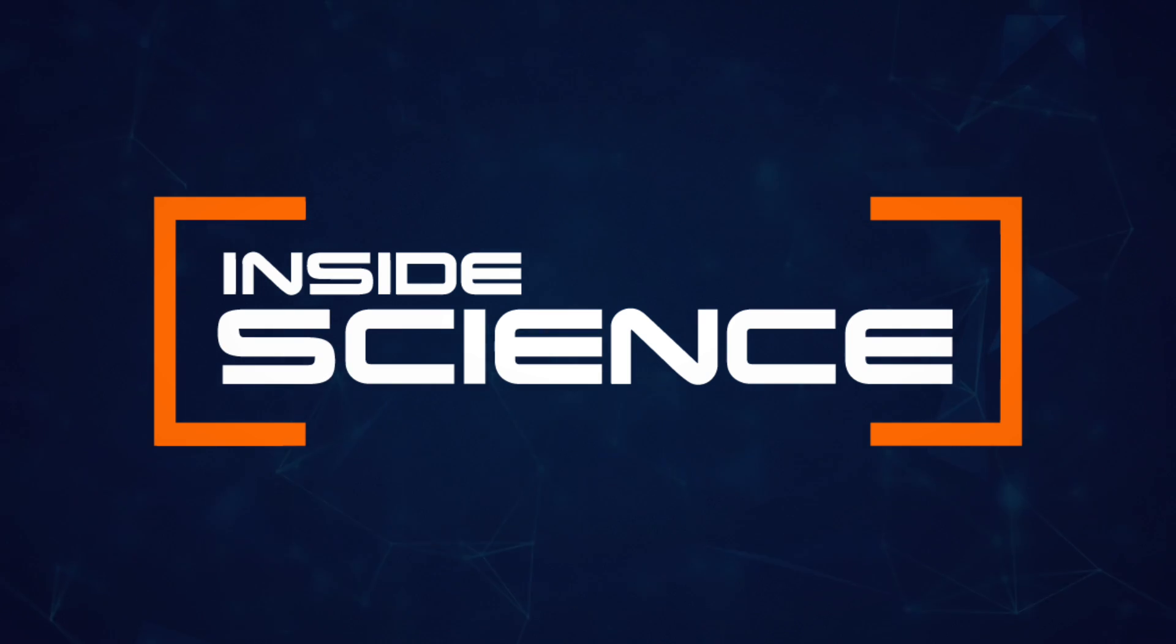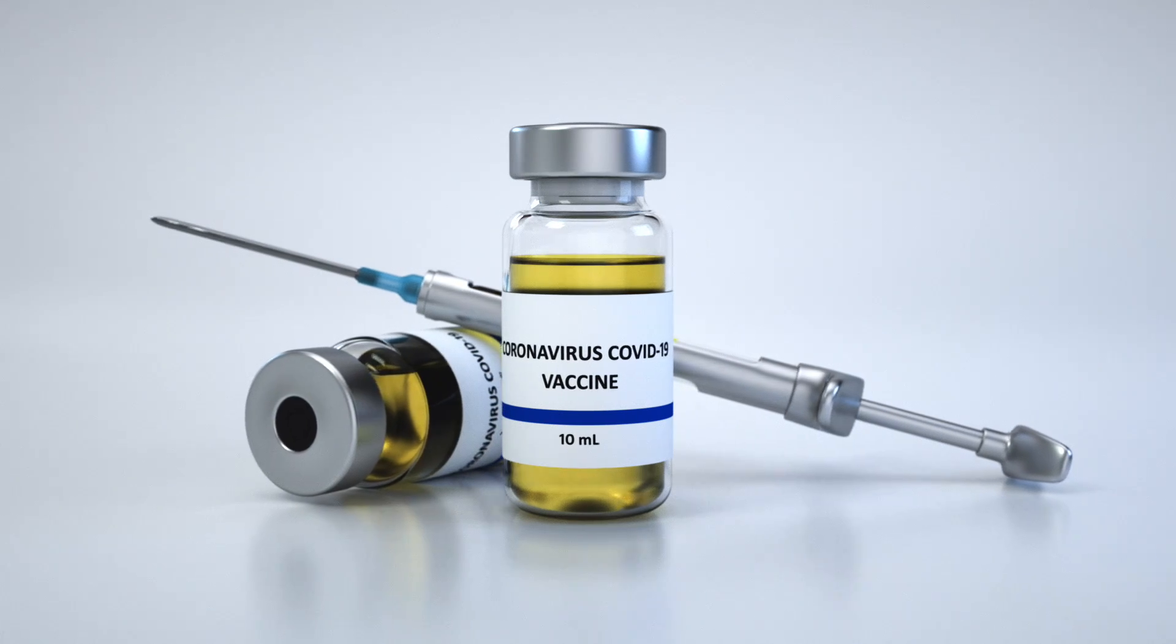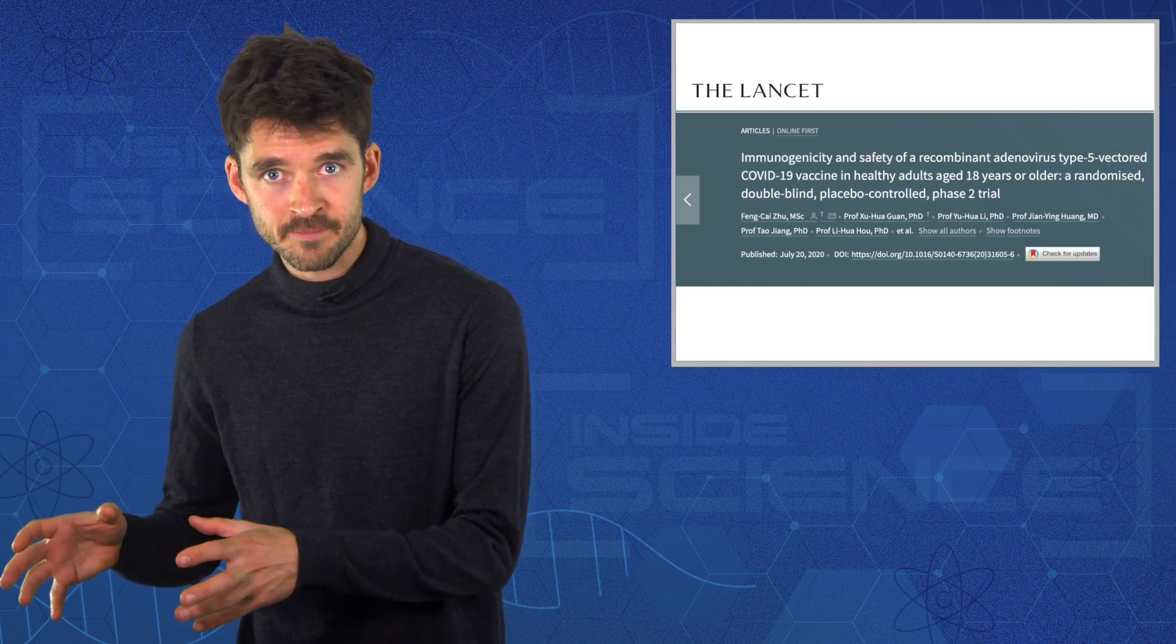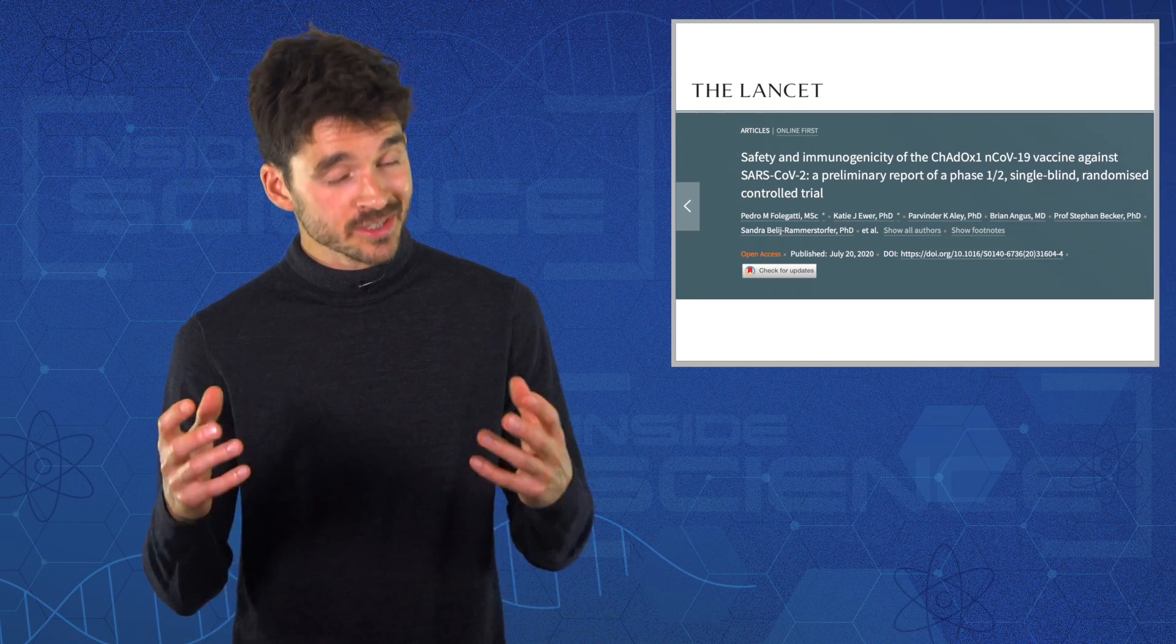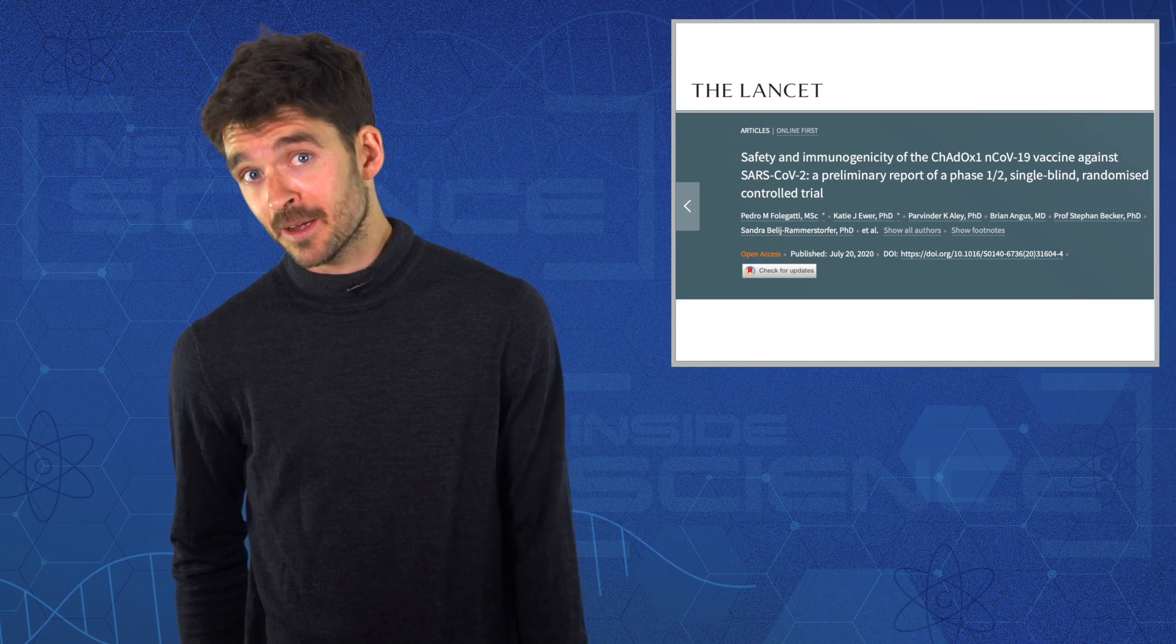Inside Science. This month two coronavirus vaccines had notable trials published. One comes from a set of laboratories in China and the other from Oxford University in the UK, and the results are pretty encouraging and pretty similar.